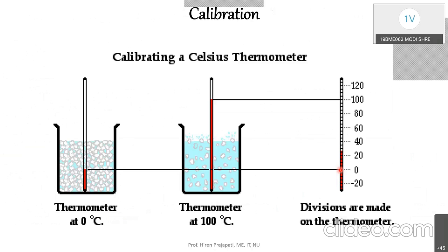A student also notes that manufacturers take care to ensure atmospheric pressure is one ATM during calibration so that the definition can be maintained. The instructor confirms this, noting that those considerations are important when preparing thermometer scales, though the entire procedure is not covered in this session.